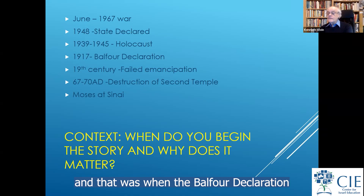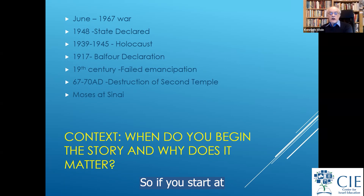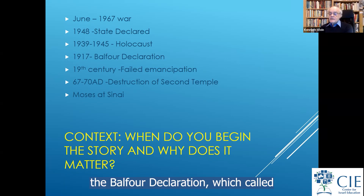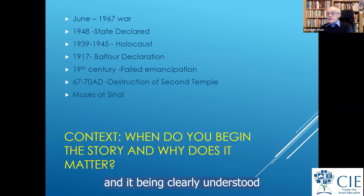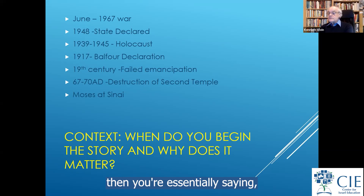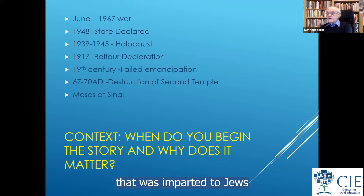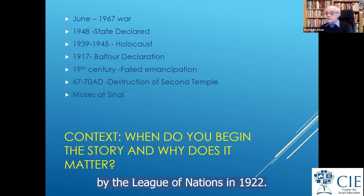That legitimacy came when the Balfour Declaration was put into the League of Nations mandate. If you start with the Balfour Declaration — which called for the establishment of a national home for the Jewish people in Palestine, clearly understanding that nothing should be done to prejudice the civil and religious rights of the non-Jewish communities — then you're essentially saying there was a measure of legitimacy imparted to Jews to establish a national home, recognized by the League of Nations in 1922.